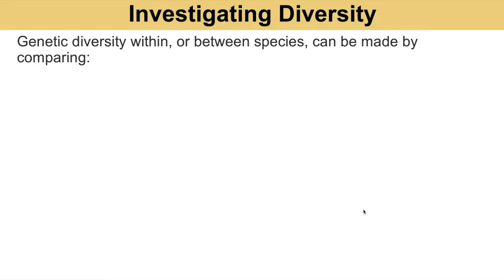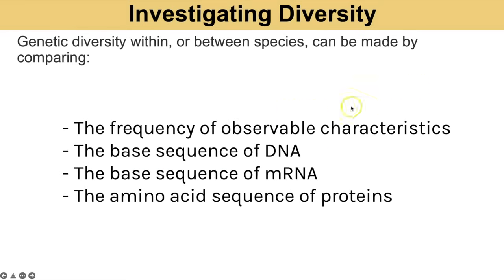Genetic diversity within or between species can be measured by comparing different factors. Comparing observable characteristics can be quite inaccurate because members of different species that aren't closely related might look similar due to similar environments. More accurate ways to compare how closely related species are include comparing the DNA base sequence, the mRNA base sequence, or the amino acid sequence for proteins — the more similar those sequences, the more closely related they must be.